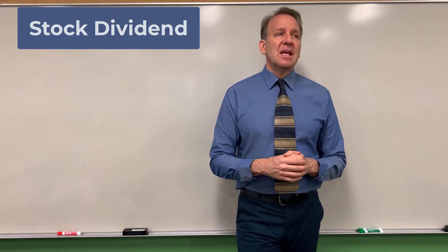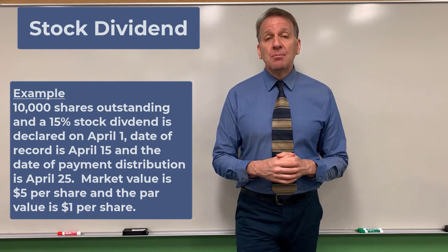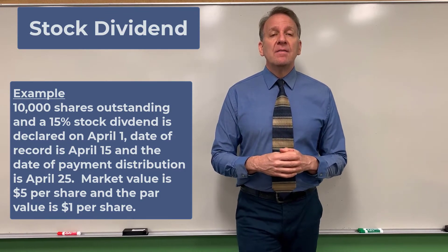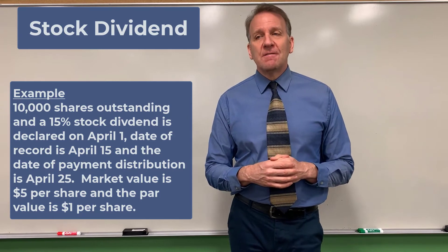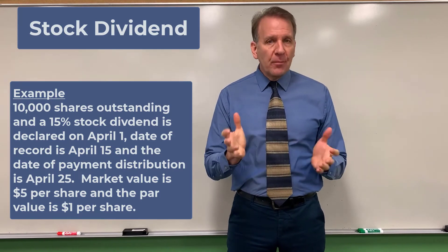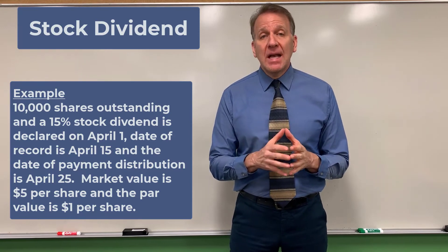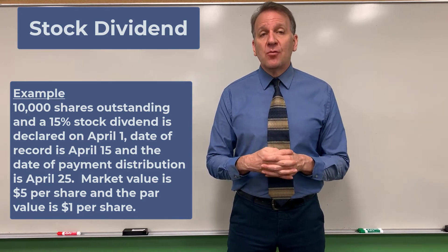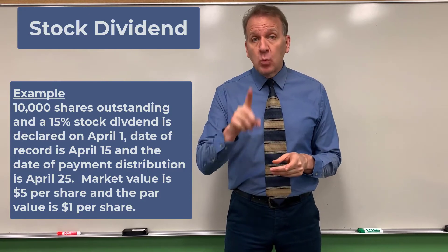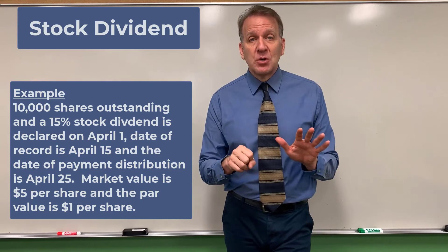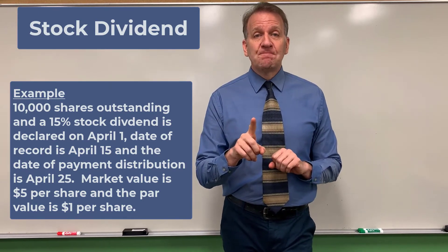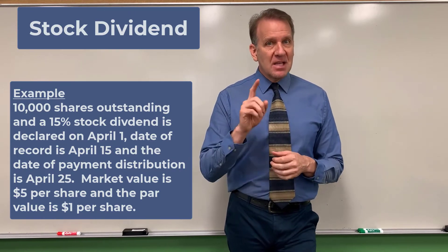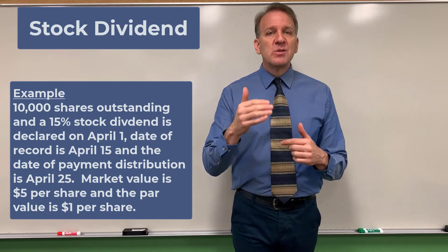Let's use this example: the corporation declares a 15% stock dividend on April 1st, for owners as of April 15th (date of record), with a distribution date of April 25th. There are currently 10,000 shares outstanding. The market value is $5 per share and the par value is $1 per share. For a small stock dividend, we calculate using the $5 market value per share — this is different from a large stock dividend, so note that distinction.